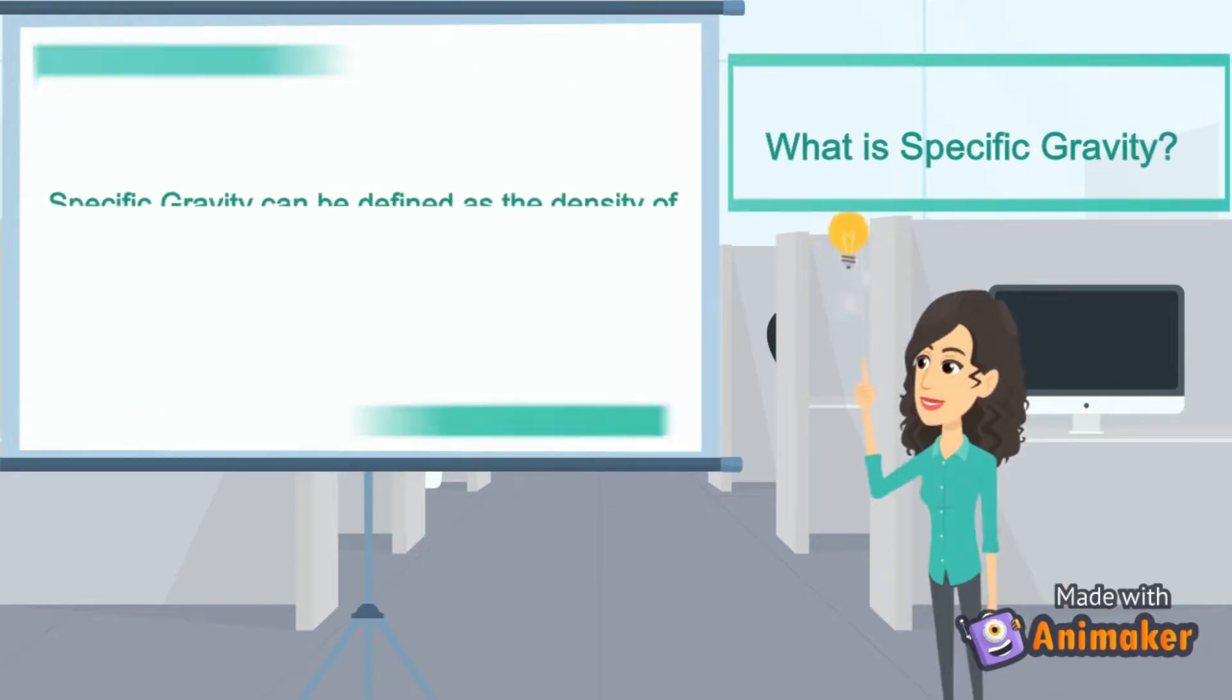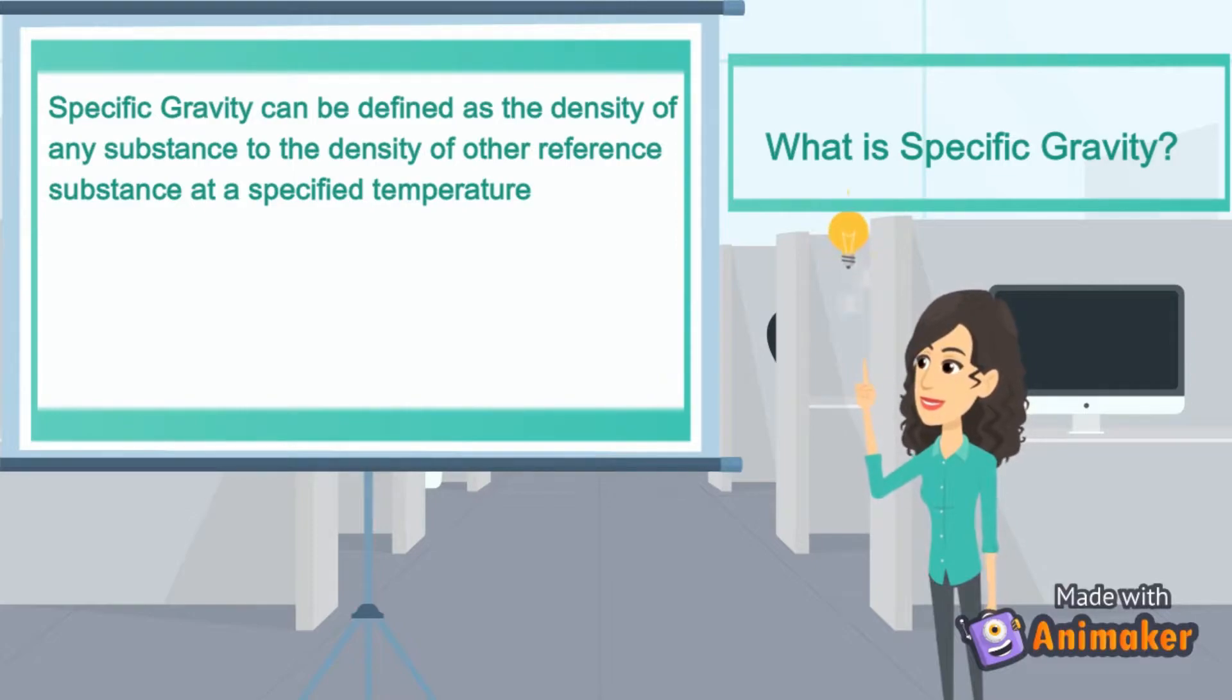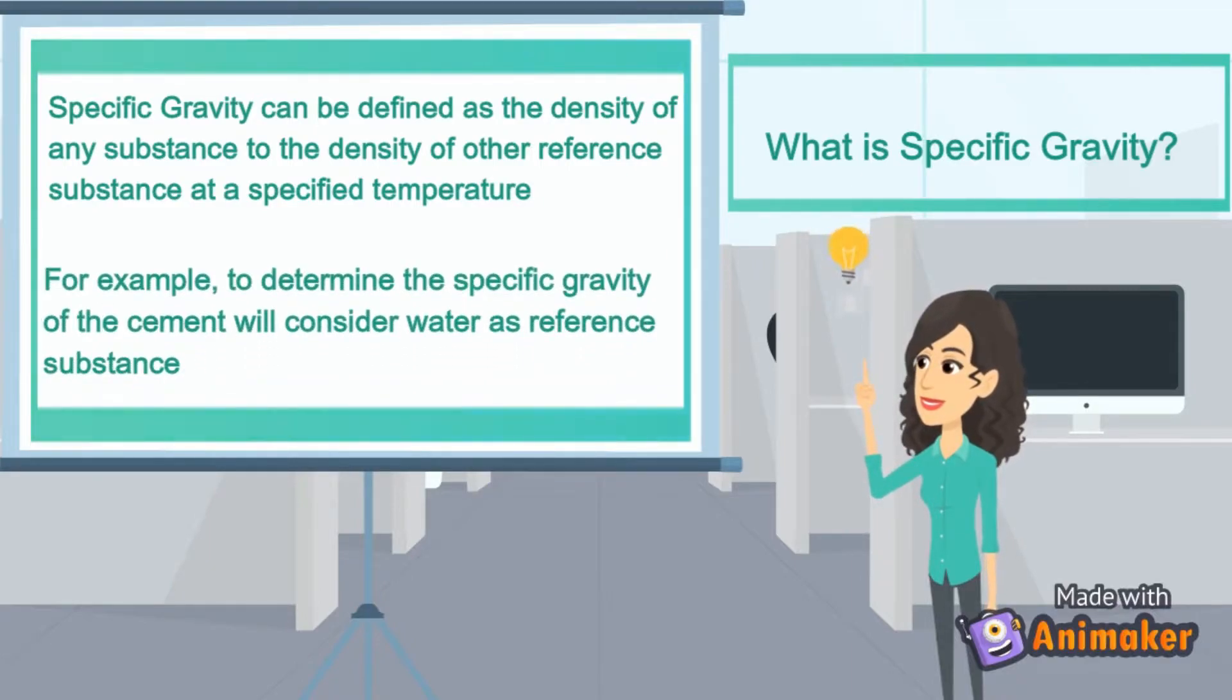So, what is specific gravity? Specific gravity can be defined as the density of any substance to the density of other reference substance at a specified temperature.